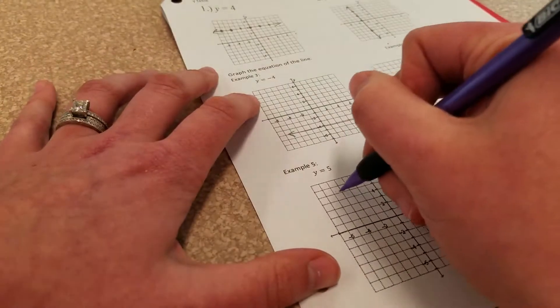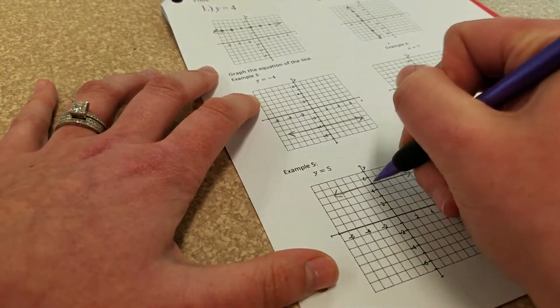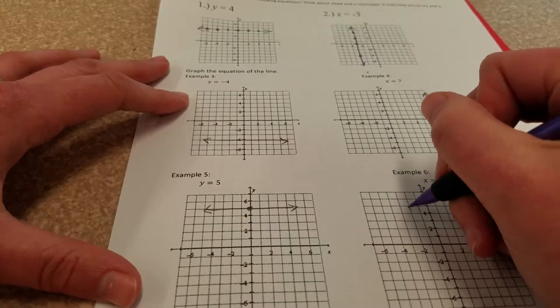y equals 5. Horizontal through y is 5. x equals negative 2.